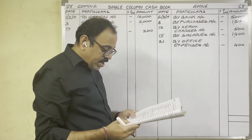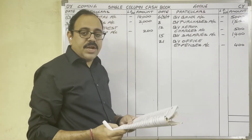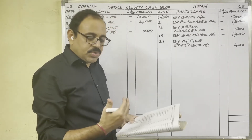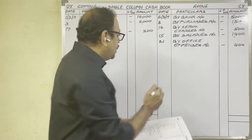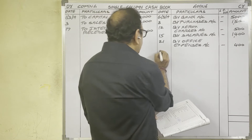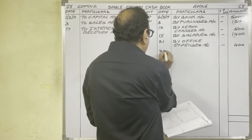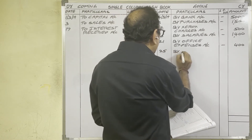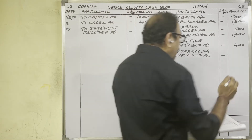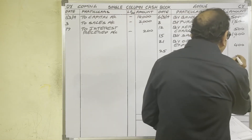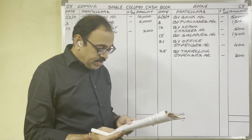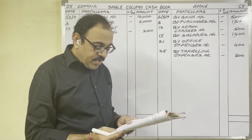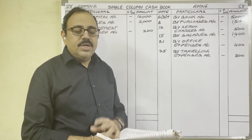25th day: traveling expenses 800 rupees. Cash is going out — credit side. Write: By Traveling Expenses account, 800 rupees.